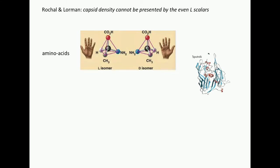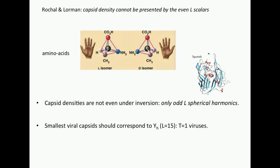And the next thing they said is you should only use the odd ones. Capsid densities cannot be represented by the even Ls. Why not? Well, they're made of amino acids. Proteins are made of amino acids. Amino acids have a chirality. You cannot just flip the density. The left and right-handed amino acids are different. So if you take this capsid protein, which appropriately from the Russian origin is called the Sputnik, if you take this Sputnik protein, then it's very different if you take left-handed and right-handed.